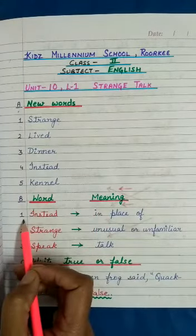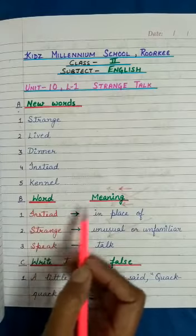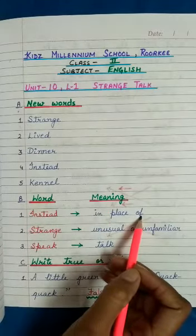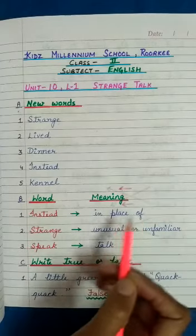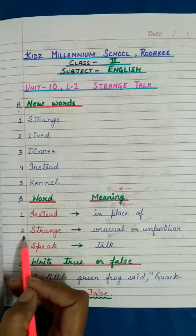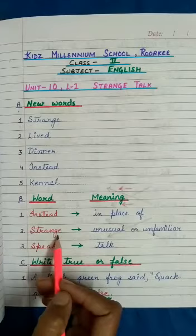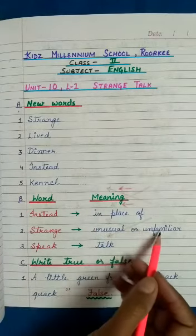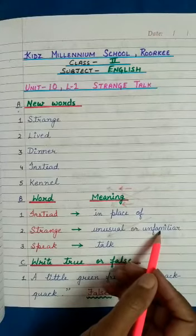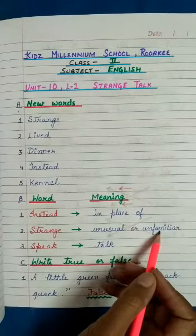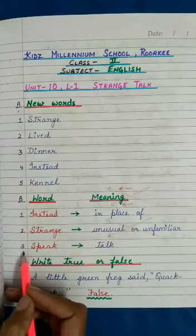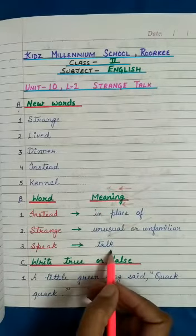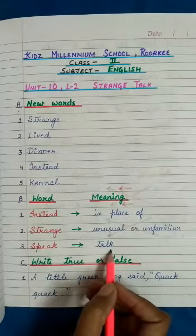The first word is Instead. Meaning: In Place Of. Means, Is-Ki Jagha Par. Second: Strange. Meaning: Unusual or Unfamiliar. Means, Ajeeb. Third: Speak. Meaning: Talk. Means, Bolana.